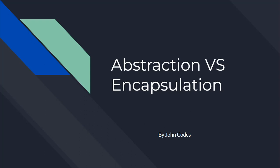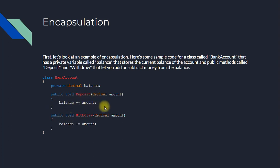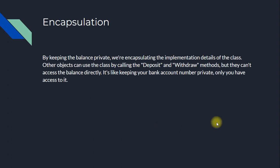First, let's look at an example of encapsulation. Here's some sample code for a class called BankAccount that has a private variable called Balance that stores the current balance of the account, and public methods called Deposit and Withdraw that let you add or subtract money from the balance. In the code: class BankAccount, private decimal Balance, public void Deposit(decimal amount) — Balance += amount, public void Withdraw(decimal amount) — Balance -= amount. By keeping the balance private, we are encapsulating the implementation details of the class. Other objects can use the class by calling the Deposit and Withdraw methods, but they can't access the balance directly. It's like keeping your bank account number private — only you have access to it.